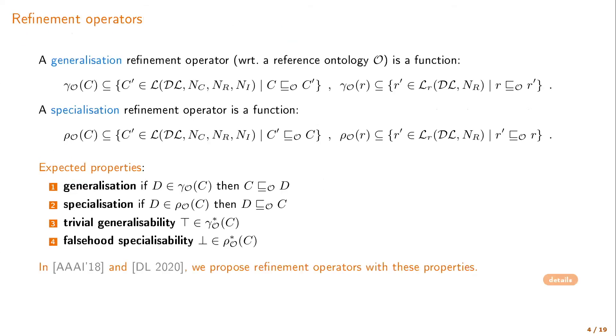I will not give the formal definition of the refinement operators that we give. But the idea is that given a reference ontology which is supposed to be consistent, we define a generalization operator, which takes a concept and outputs some concept which is more general than the previous one with respect to our ontology. And similarly, given a role, we can obtain some role which is more general with respect to the reference ontology. And similarly, we have a specialization operator, which finds concepts and roles which are more specific than the one we give it.